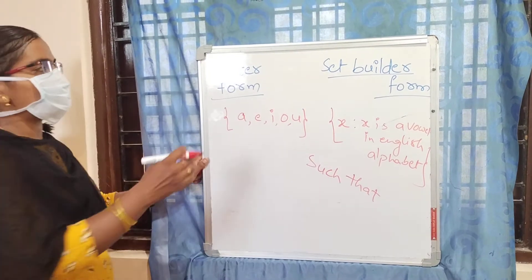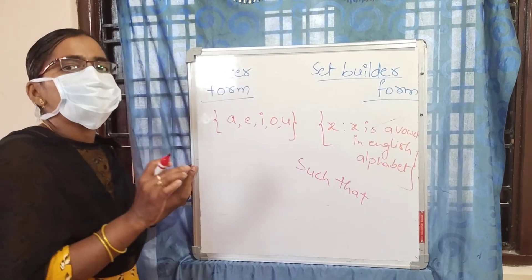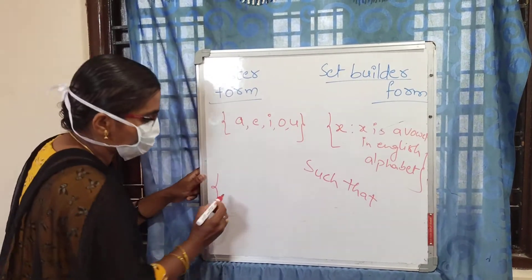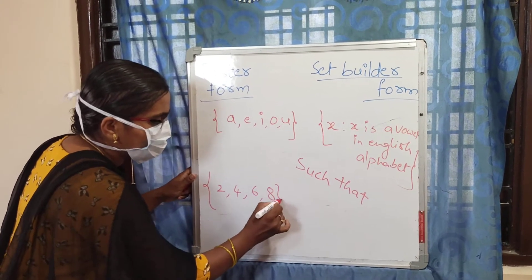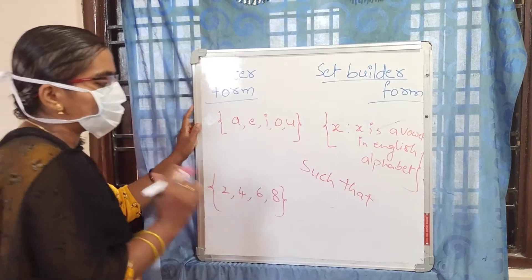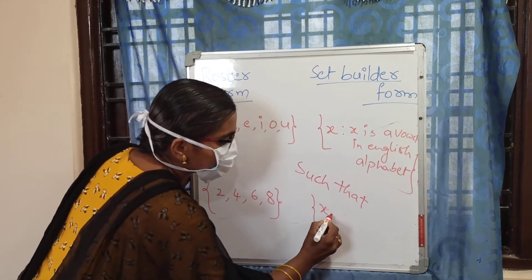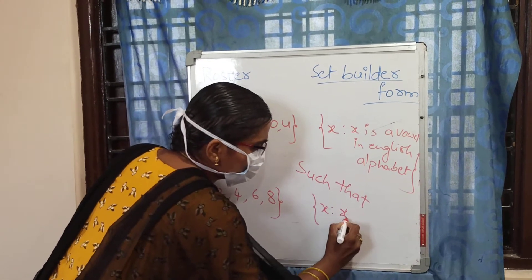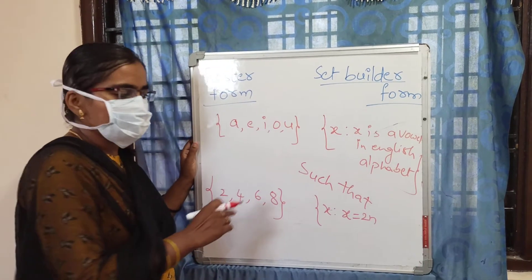Next, one more example using even numbers below 10. That we can write in roster form as: 2, 4, 6, 8. And we can also write this in set builder form. We write: x such that x is equal to 2N.